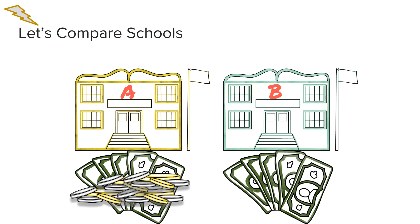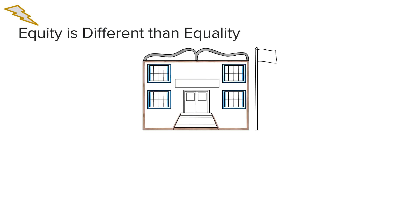The district determines where the dollars go based on students' unique and specific programming needs within each building. Equity is determined by the needs of the students within each school building. Resources are allotted per school based on student population factors and demographic subgroups.